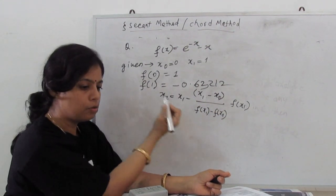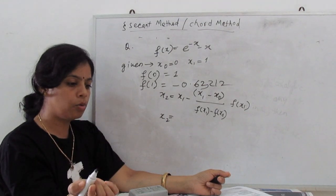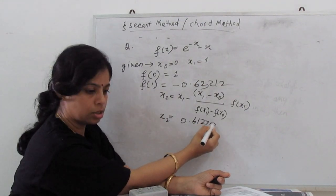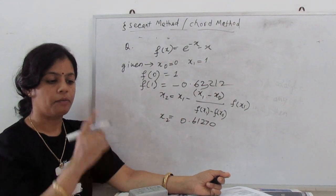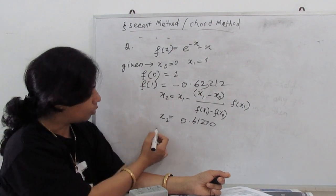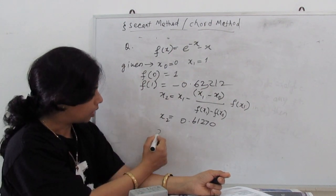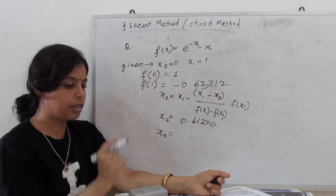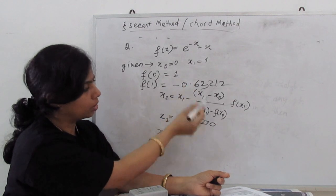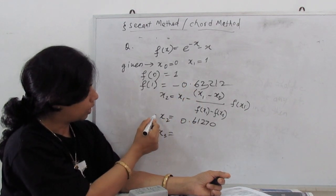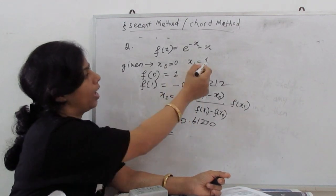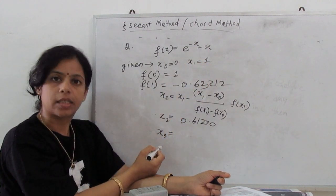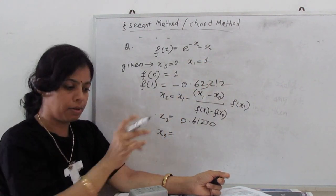This gives us x_2 = 0.6120. Next, we calculate the third iteration x_3 using x_2 and x_1 values. x_3 = 0.56384.